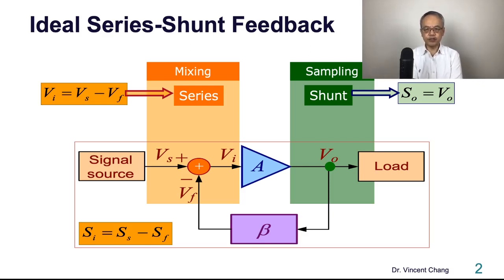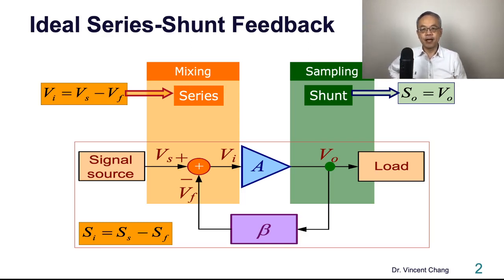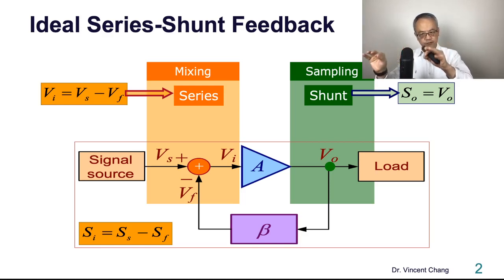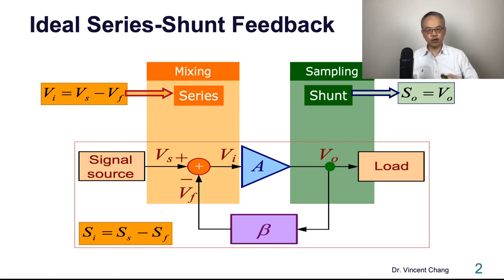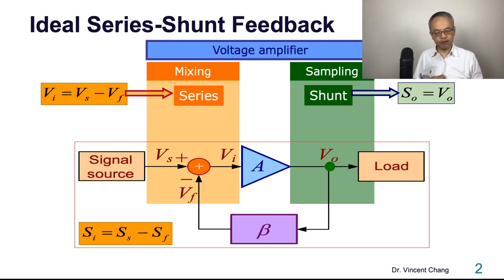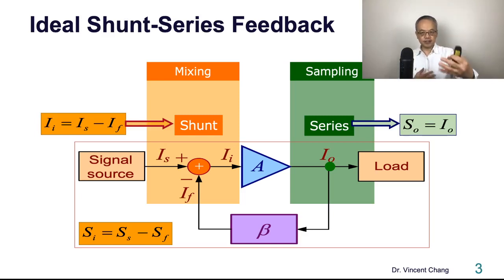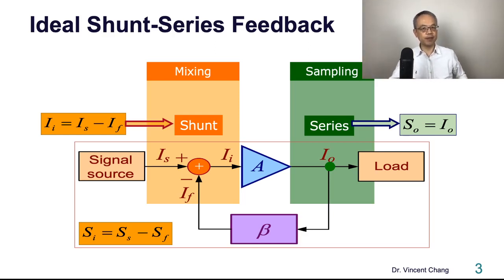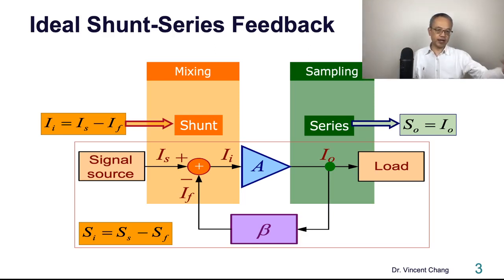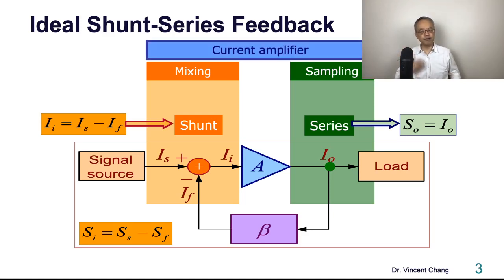Let's start with the ideal series-shunt feedback. Series-shunt feedback means series mixing and shunt sampling. Series mixing indicates the signal mixes based on voltage — it's a voltage mixing. Shunt sampling tells us it's a voltage sampling, so the nature of the amplifier is a voltage amplifier. The second type of feedback topology is shunt-series: current mixing and series sampling, so it's a current amplifier.